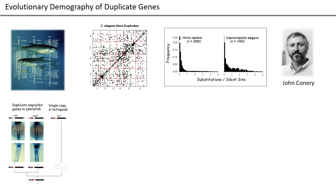As whole genome sequences became available, John Conery and I realized that you could interrogate single genomes for the presence of all possible duplicate gene pairs. This is a dot plot for C. elegans — there are about 1,000 duplicate gene pairs we found. By using silent site divergence, you can figure out the age distribution of these duplicate genes in genomes. From the slope and the intercept, you can figure out the birth rate and the death rate of such genes. We were able to conclude that the average rate of gene duplication is roughly equal to the average mutation rate per nucleotide site per genome.